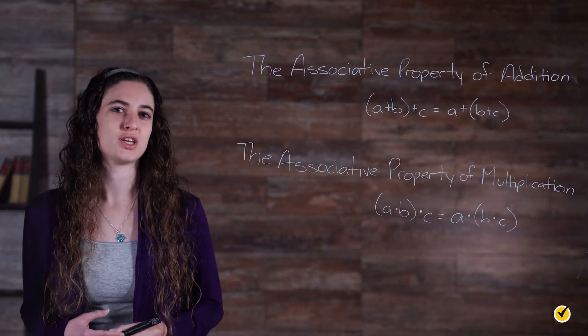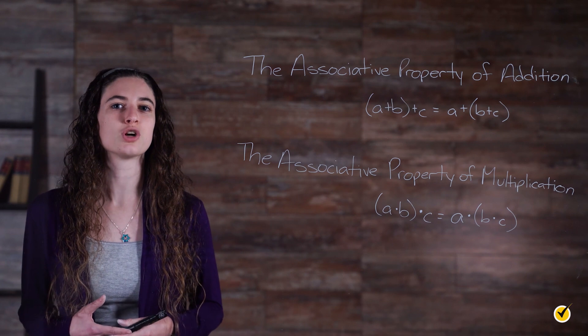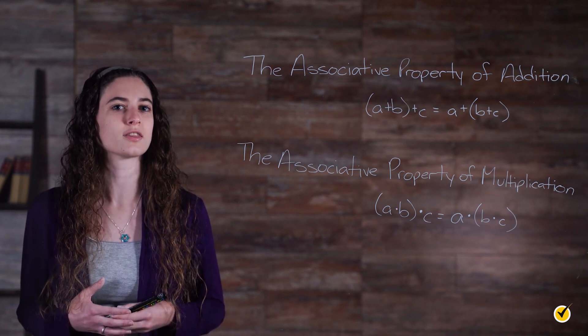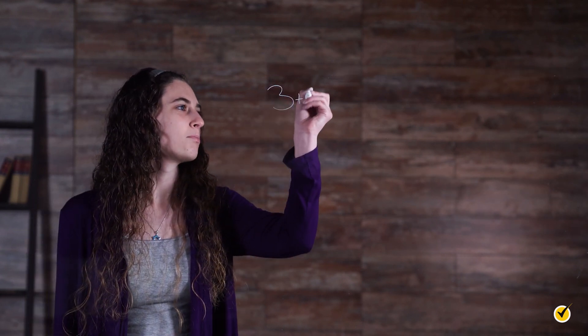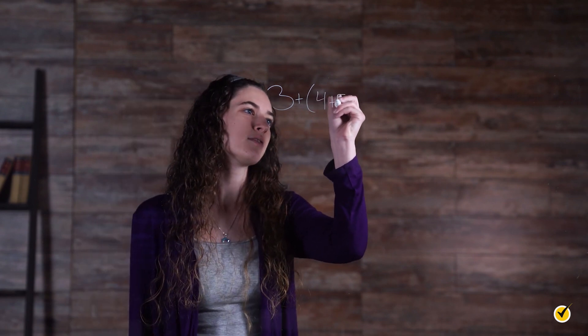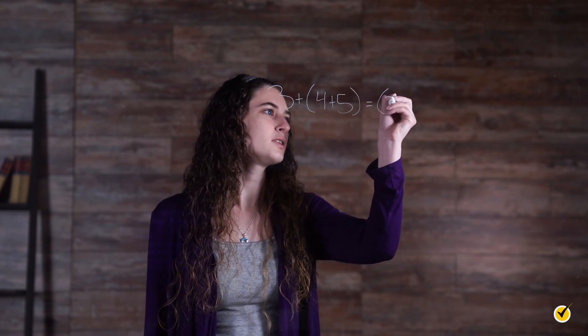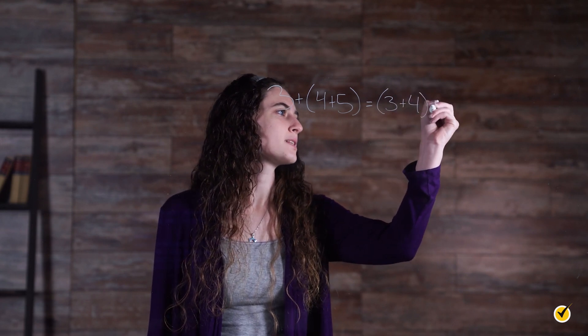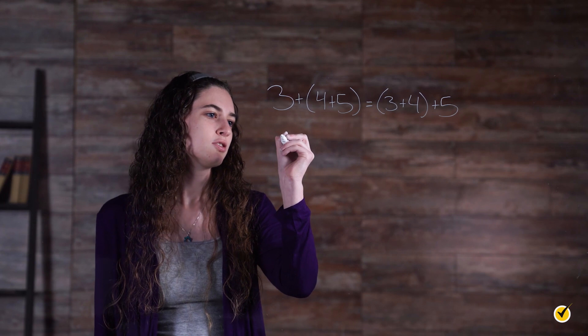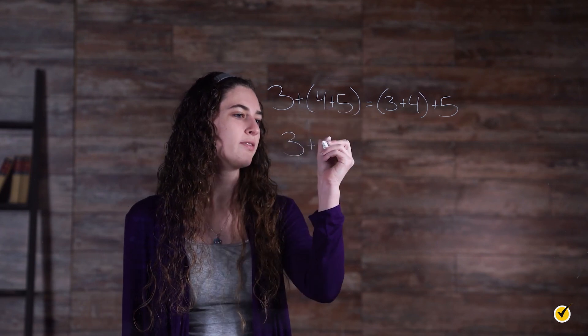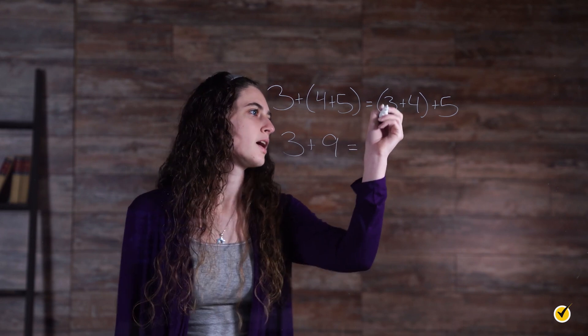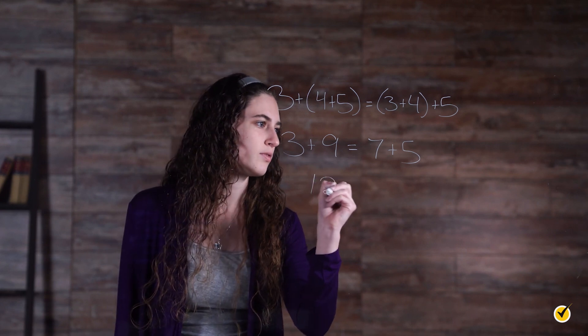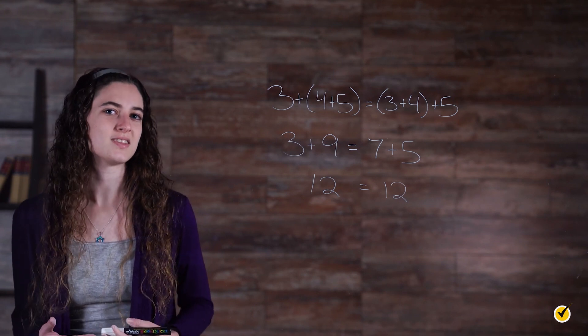Let's look at an example of this property used in an addition problem. This example will show that adding the last two terms first or adding the first two terms first simply does not matter. Let's take a look at 3 plus (4 plus 5) equals (3 plus 4) plus 5. Doing what's in the parentheses first: 4 plus 5 equals 9, and 3 plus 4 equals 7. Then 9 plus 3 is 12, and 7 plus 5 is also 12. So 12 equals 12.